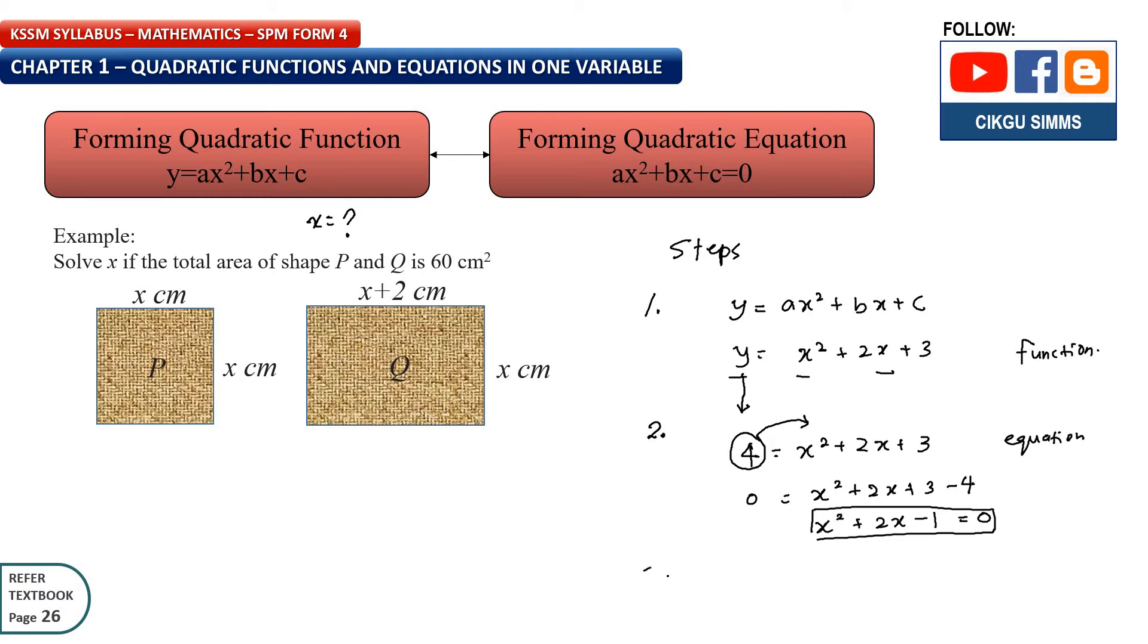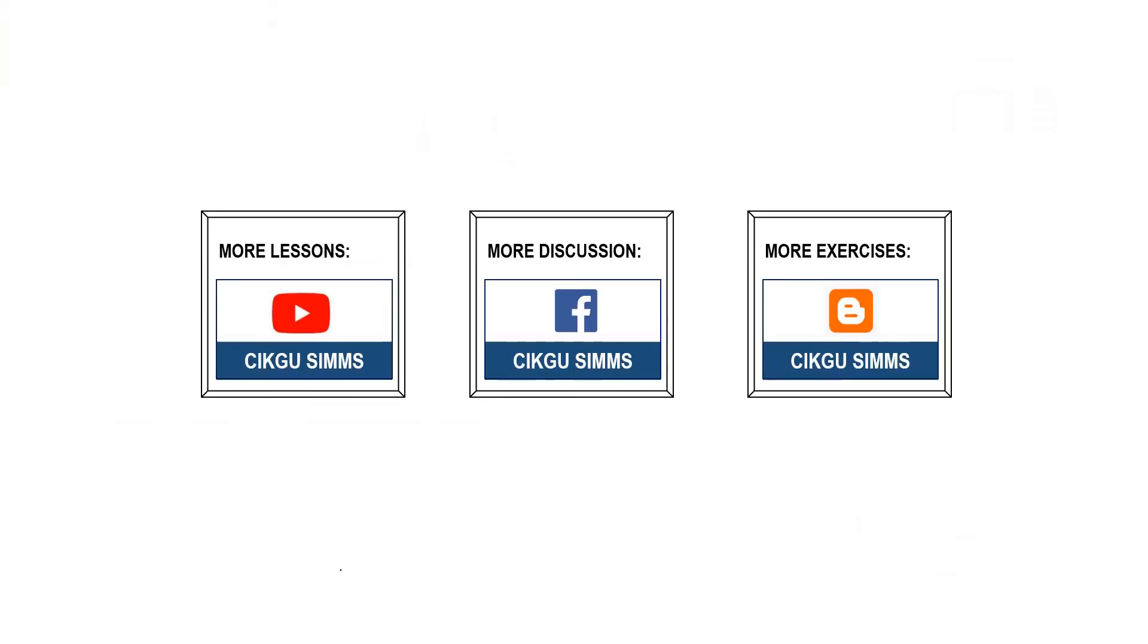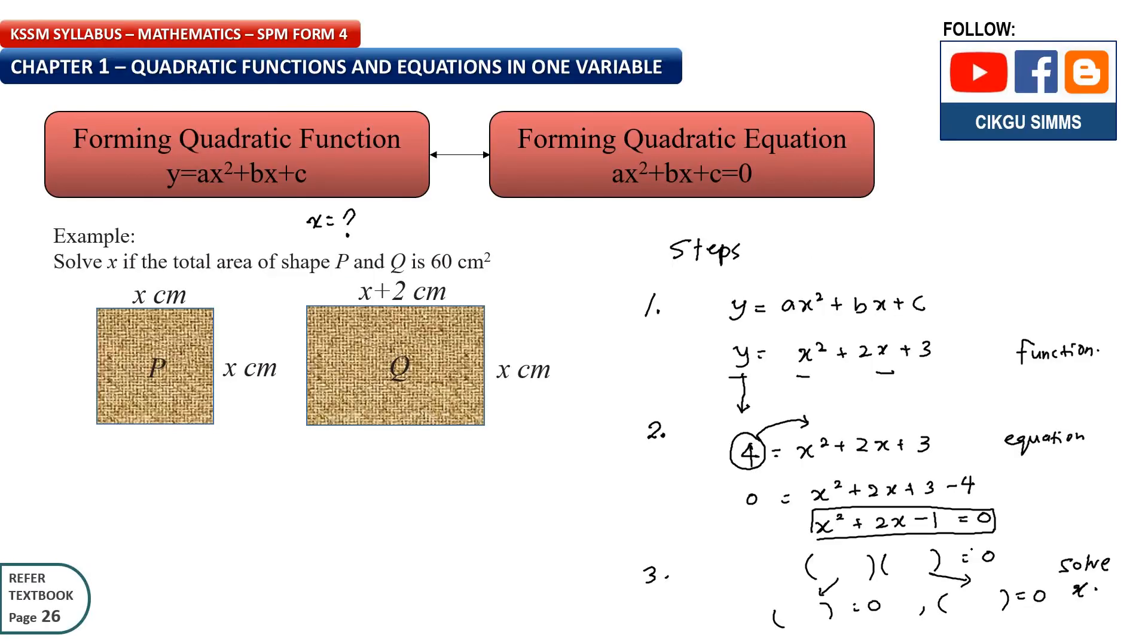And lastly, you can solve for x using factorization. And then the first bracket equals to 0, second bracket equal to 0. So this is your solve for x. So let's see the first example.